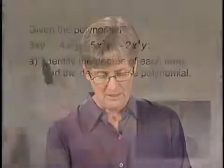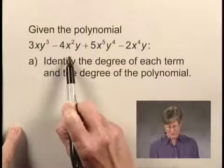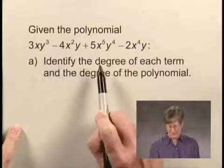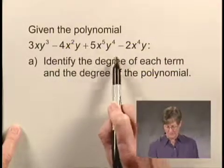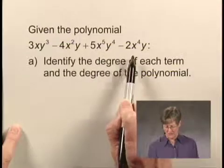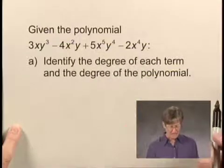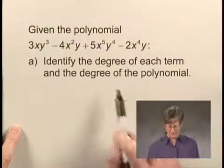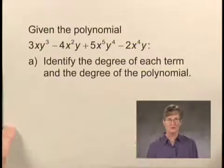In this exercise, we're given the following polynomial: 3xy cubed minus 4x squared y plus 5x to the fifth y to the fourth minus 2x to the fourth y. We're asked, first of all, to identify the degree of each term and the degree of the polynomial.